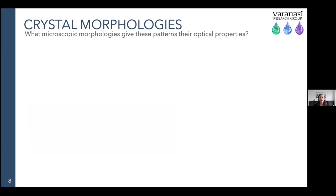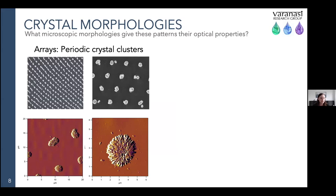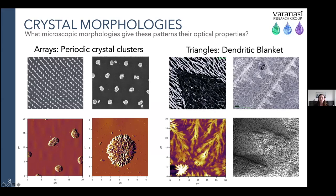Looking at SEM and AFM images, these are crystal clusters that form on the substrate during evaporation. The triangles are a dendritic blanket of crystals — dendritic structures tend to form in diffusion-limited cases — and we have multiple layers of this blanket: a lighter, thinner phase and a darker, thicker phase. This is more apparent in AFM images or tilted SEM images, where the difference between those two layers is much more obvious. This difference in height gives the optical effect that makes it look like two different colors of the triangular patterns.